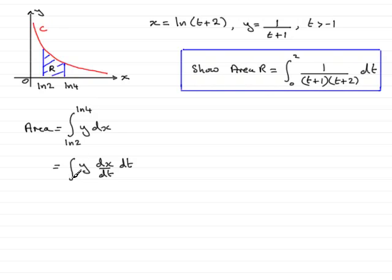So how do we change the limits for t? Well, what we know—we'll just put this over here in a margin, let's just do that down here—what we know is that x equals the natural log of t plus 2. So when we have the first limit, when x equals natural log of 2, let's just put that down here.